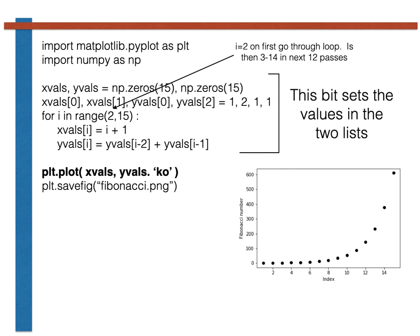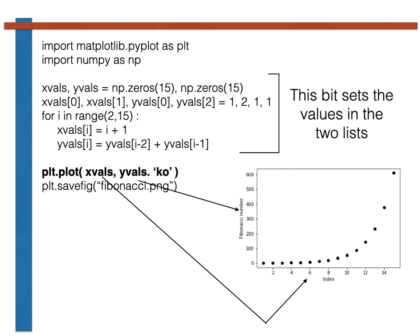The code finishes with the plt.plot command that we have just learned about, which draws our graph. The x-coordinates are contained in the array called xvals, while the y-coordinates, which are the Fibonacci numbers, are in yvals. Hopefully, that is relatively clear. See if you can now use this idea to draw your own graph of a different series. Good luck!